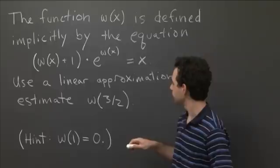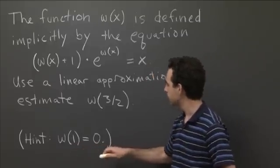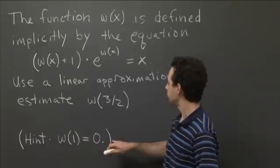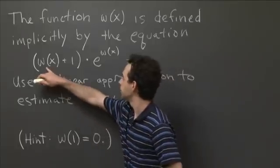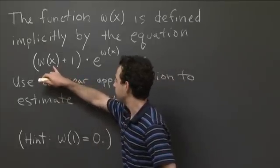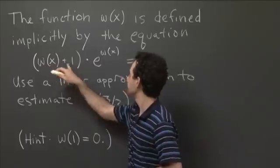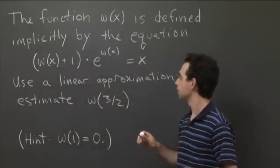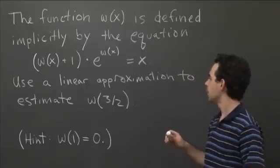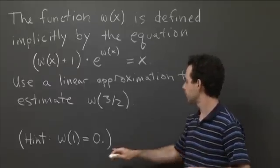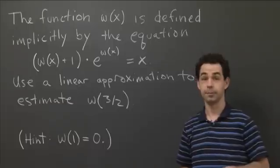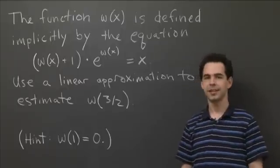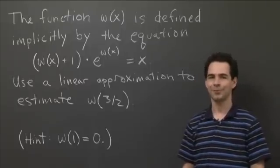As a hint, I'm pointing out that w(1) = 0. If you put in x = 1 and w(1) = 0 on the left-hand side, you do indeed get 1, as you should. That'll give you a hint about where to base your linear approximation. So why don't you pause the video, take a few minutes to work this out, and come back and we can work it out together.